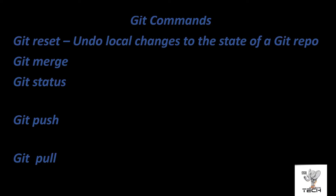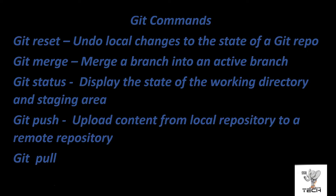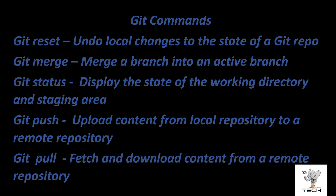You have reset, which undoes local changes to the state of your Git repo. You have merge. You have status, which tells you the state of your working directory and staging area. You also have push, which uploads content from your local repository to a remote repository. And then you have pull, where you fetch and download content from a remote repository. Push and pull you're going to hear often as I go on. Don't worry — I'm going to explain some of this in great detail.